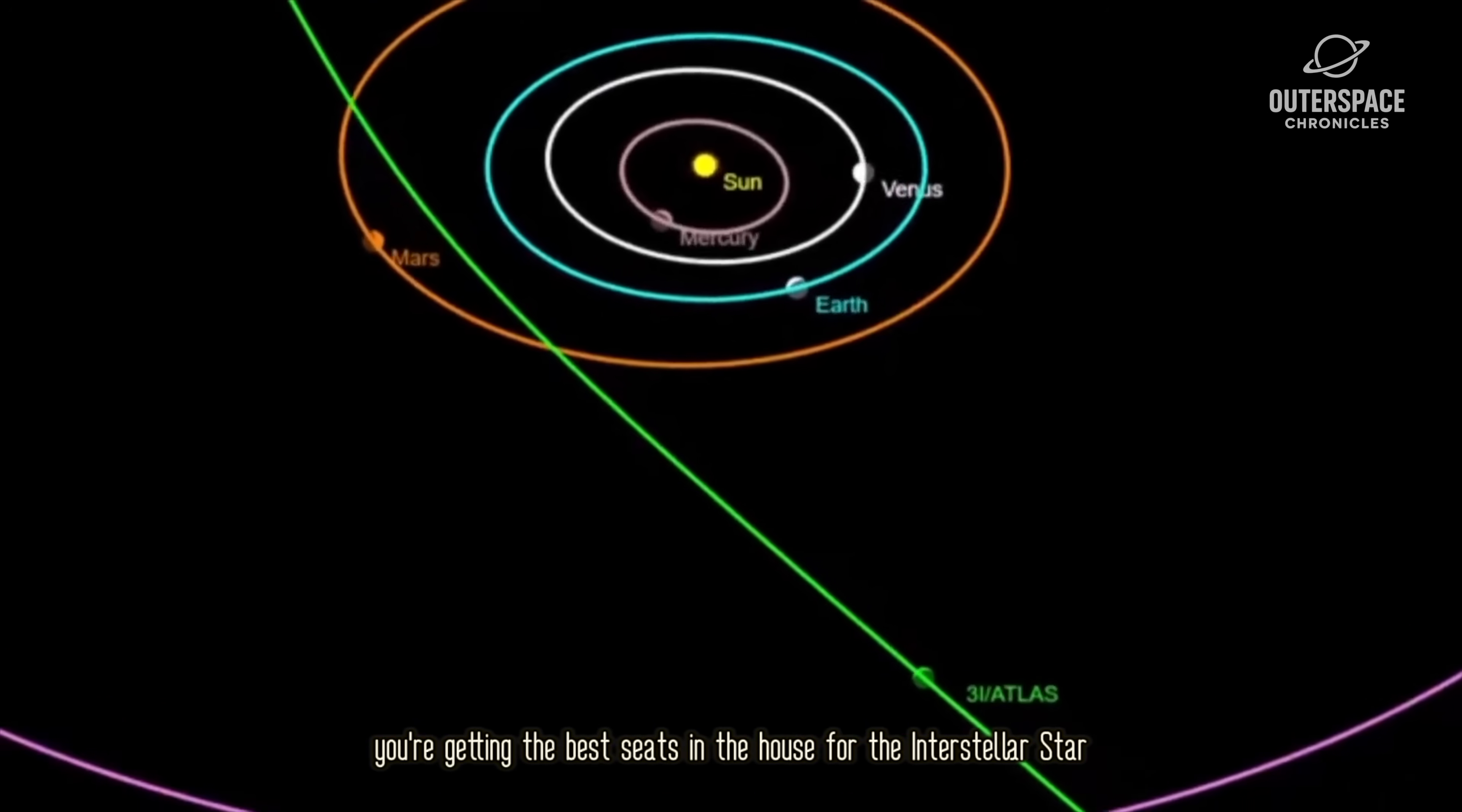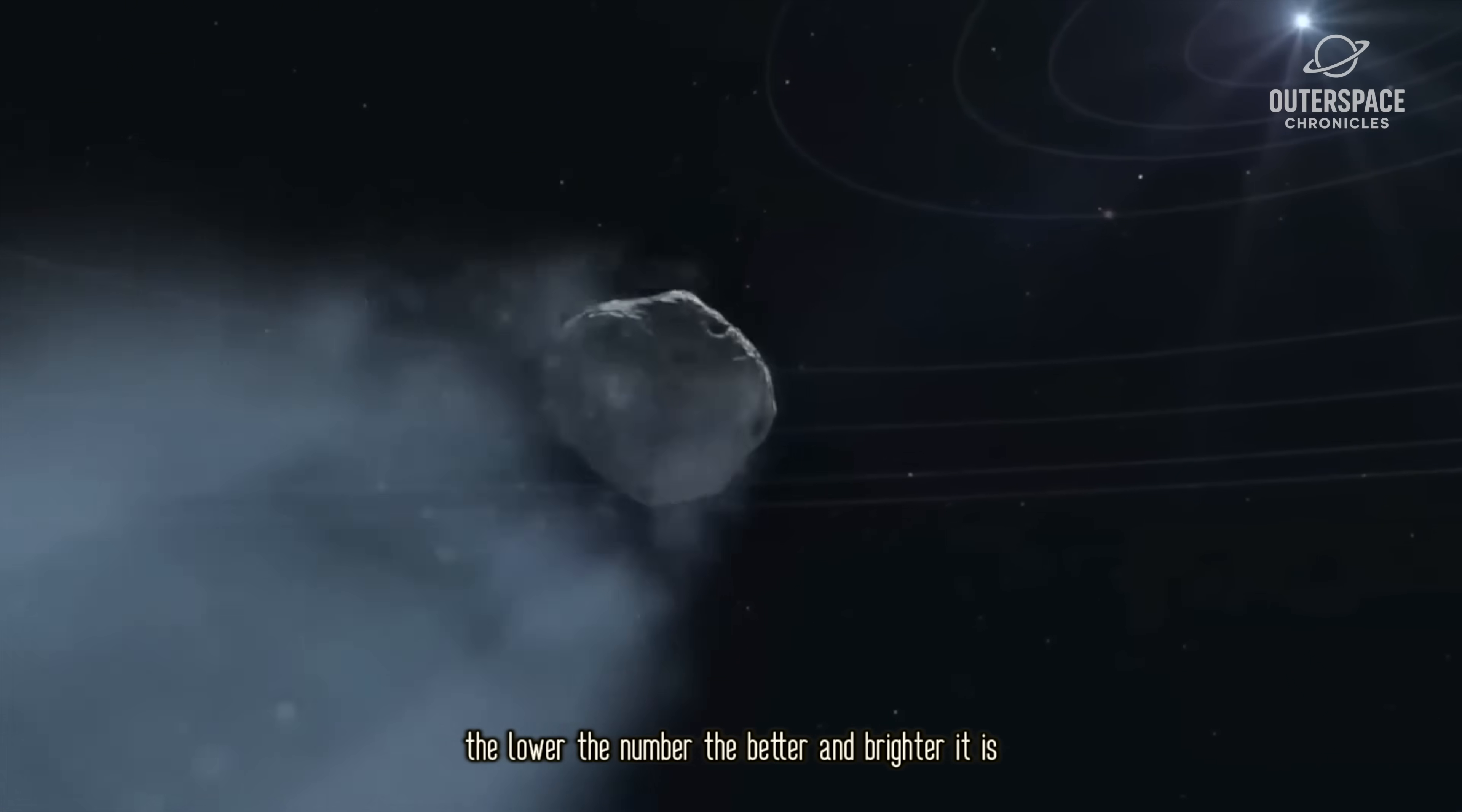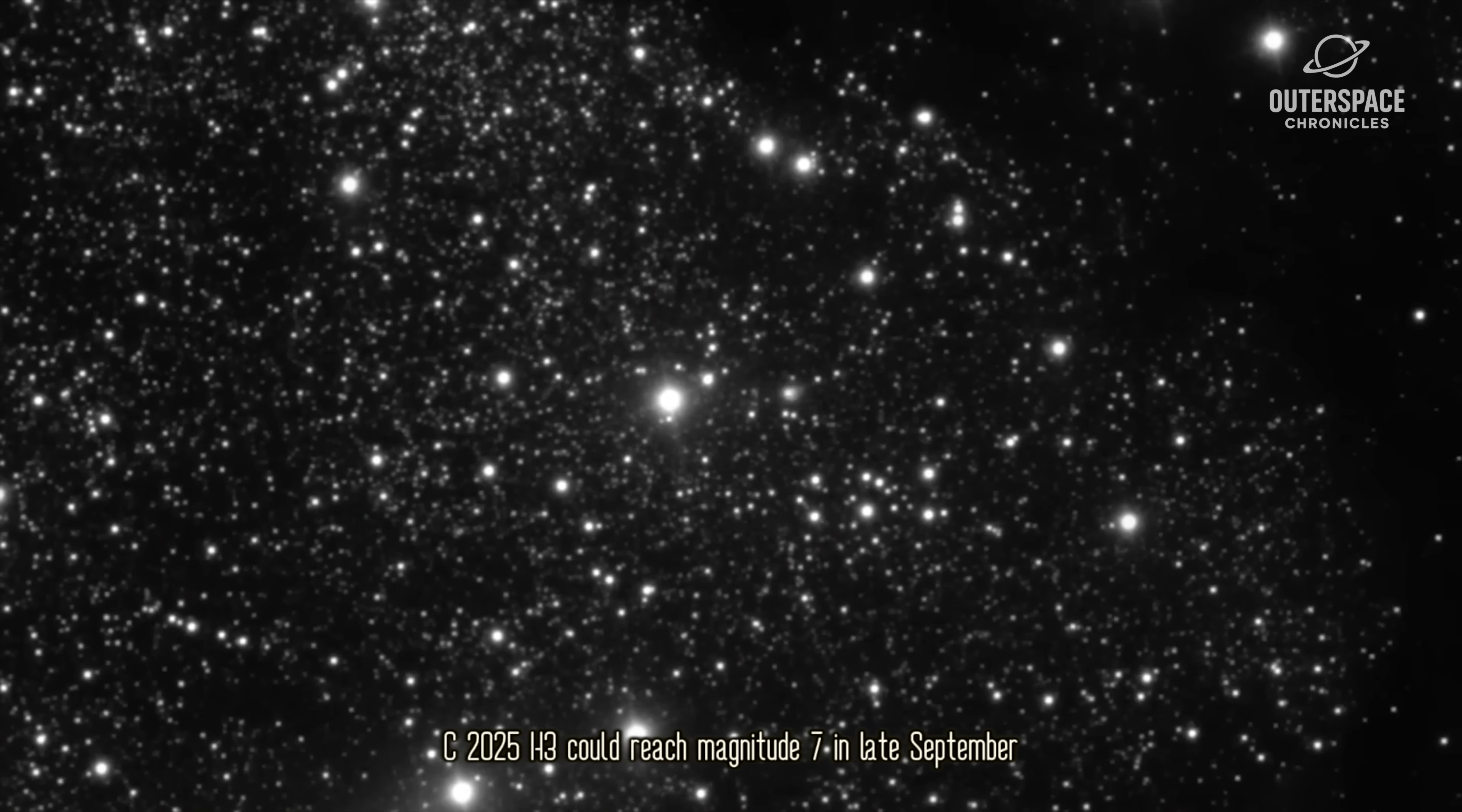So can you actually see them? For sky watchers, particularly south of the equator, you're getting the best seats in the house. 3I Atlas glides through the constellations Sculptor and Cetus in October. Its brightness, or magnitude, will be around 9. In astronomy, magnitude is like a golf score: the lower the number, the brighter it is. At magnitude 9, you'll definitely need a 6-inch telescope and a dark site away from city lights. The brightest of the local bunch, C2025 H3, could reach magnitude 7 in late September. That's prime binocular territory under rural skies.